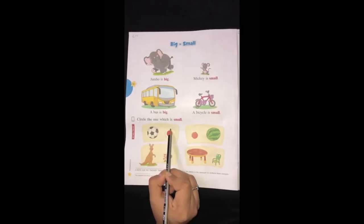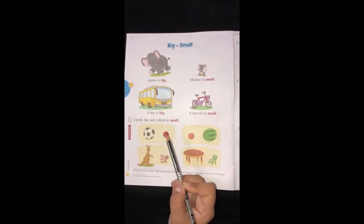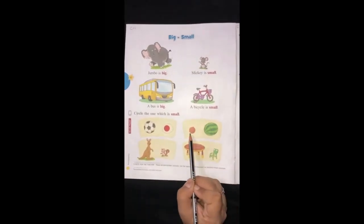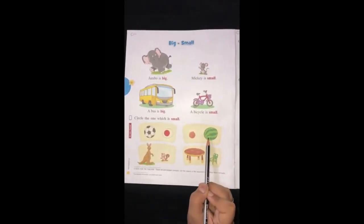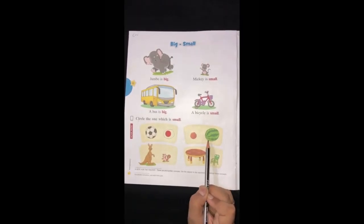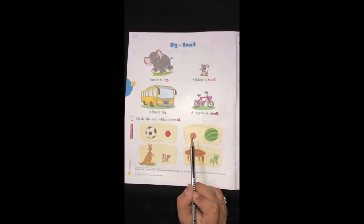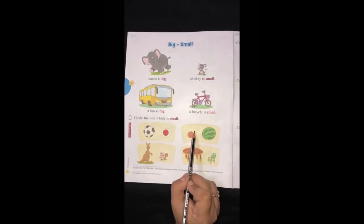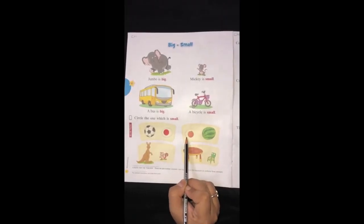Very good, my children. Now let's see the other picture. Yes! There are two fruits, an orange and a watermelon. Which fruit is small in size? An orange is small in size. Let's circle an orange.